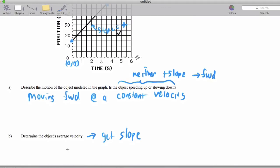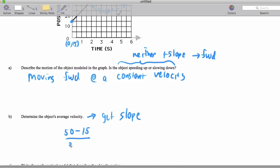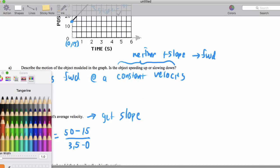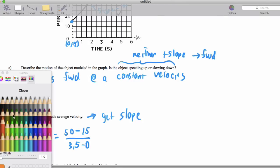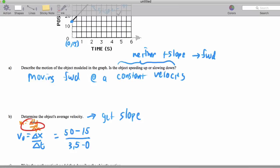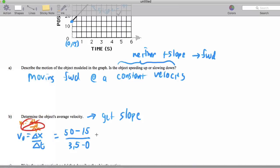So I will take 50 minus 15 over 3.5 minus 0. That slope, the v-naught, is going to be delta x over delta t. Remember what I said. I know that a lot of you would love to see this written as m is delta y over delta x. But please remember, we're now in physics, so we're not going to be using this approach at all.